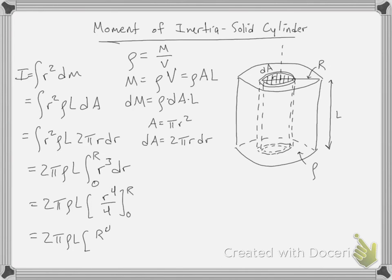Plugging this in, we have capital R to the fourth over 4 plus 0. And so we have 2 pi rho L r to the fourth over 4. The 2 cancels, brings a 2 there.